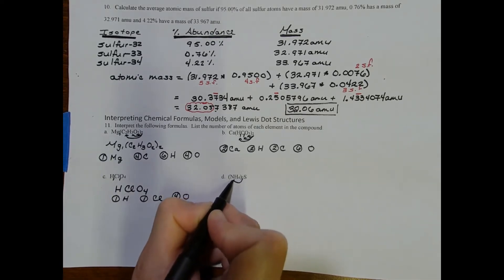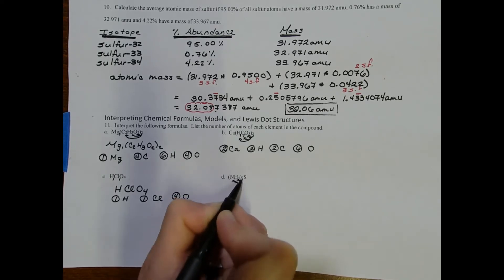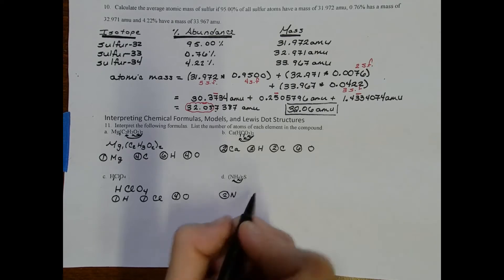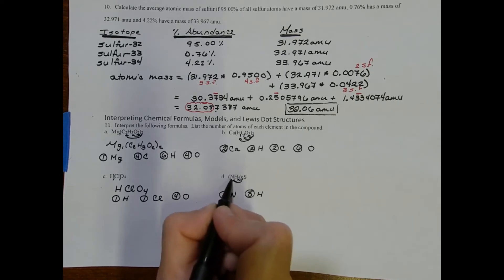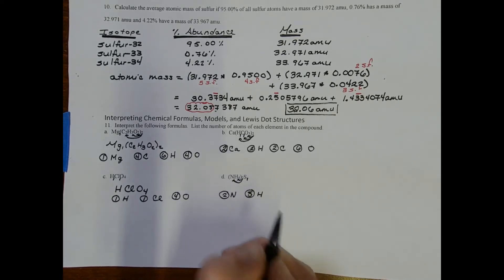Here we have another set of parentheses. So we're going to do 2 times 1, so 2 nitrogen, 8 hydrogen, and then the 2 is just for the parentheses. There's only 1 sulfur in this compound.